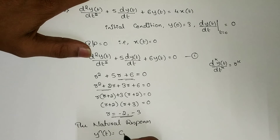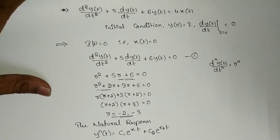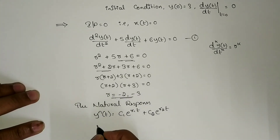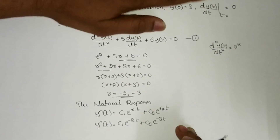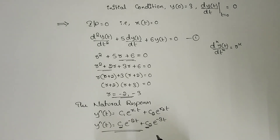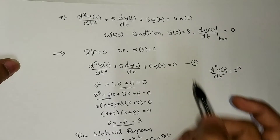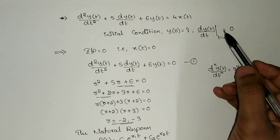The natural response for two r values is y_n(t) = C₁ e^(r₁t) + C₂ e^(r₂t). Substituting r₁ = -2 and r₂ = -3: y_n(t) = C₁ e^(-2t) + C₂ e^(-3t). Now we need to find C₁ and C₂ using the initial conditions y(0) = 3 and dy(t)/dt at t = 0 is 0.